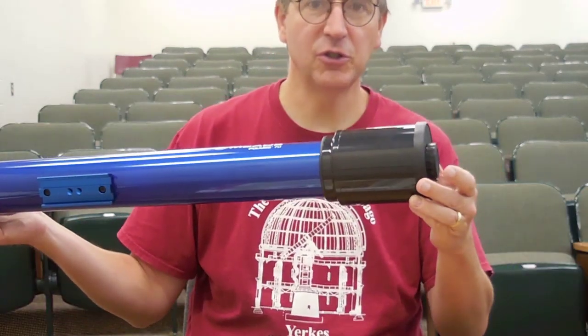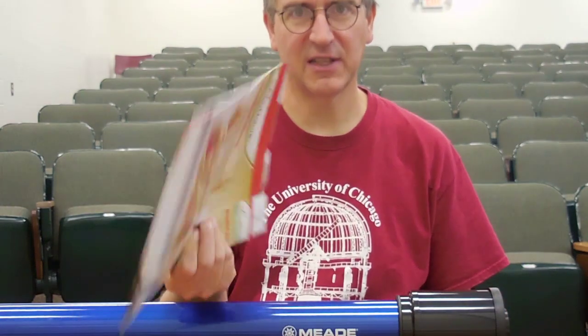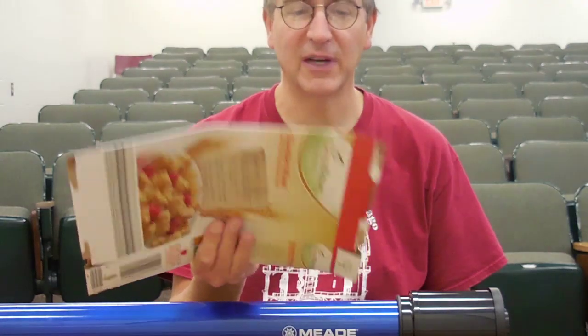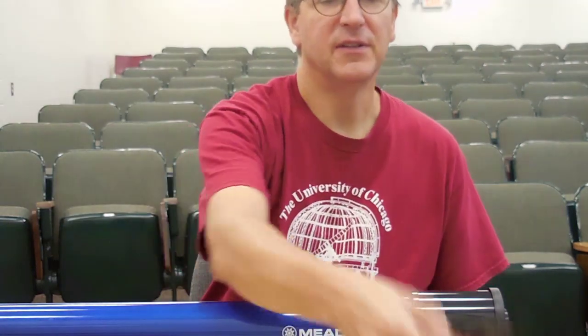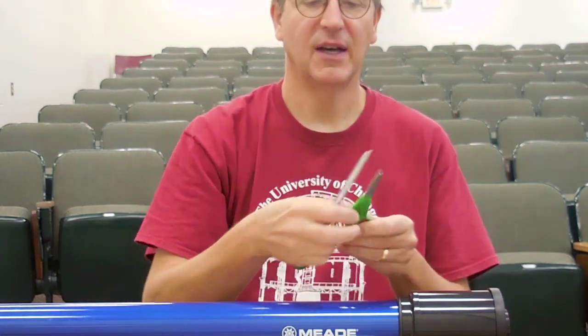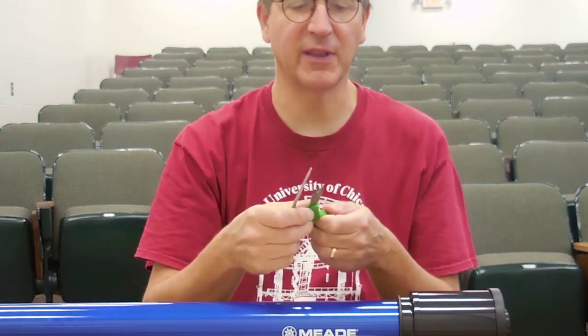To do the aperture mask project, you need your telescope tube, you need some thin cardboard like a cereal box, not thick cardboard but thin cereal box or shoebox cardboard. You'll need something to write with, you'll need a dime, you'll need a quarter, and some small scissors, also maybe some big scissors to make things go faster.